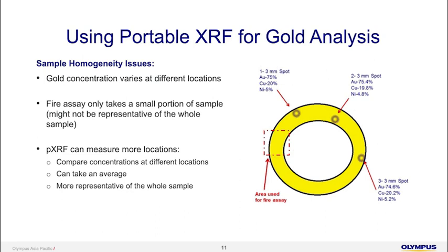For fire assay, it is only taking a small portion of the sample — typically around 0.5 to 1 gram — which may not be representative of the whole sample. We should take fire assay results with a pinch of salt when comparing with other technologies, because fire assay only tests a small portion and taking additional spots costs additional money. With XRF, because it is non-destructive, we can measure more locations, compare concentrations at different locations, and take an average for a better representative reading of the whole sample.